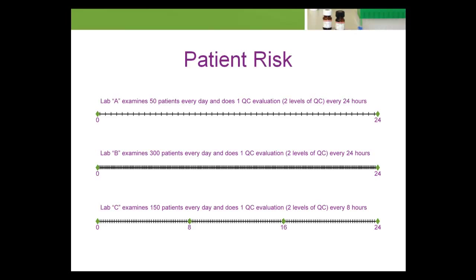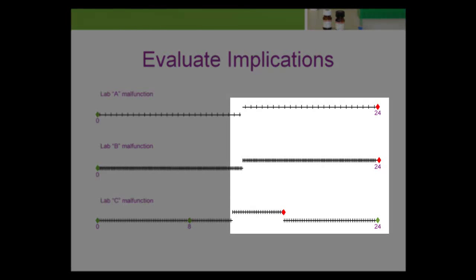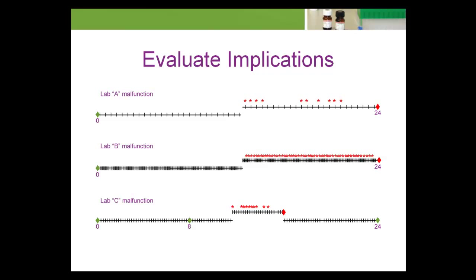To evaluate the implications of these QC strategy design decisions, let's look at what happens when the test systems malfunction in a non-obvious manner in the middle of the day. There is little risk in an obvious malfunction producing unreliable results; it is the unrecognized malfunction that increases patient risk. A shift in results can be difficult to detect prior to a QC event because the true patient concentrations are unknown. This illustration depicts a malfunction that shifts results higher to the extent that there is a 40% chance that the examination error in an individual patient result is large enough to make the result unreliable, exceeding the allowable total error. Each red asterisk represents an unreliable patient result produced due to the unrecognized malfunction.